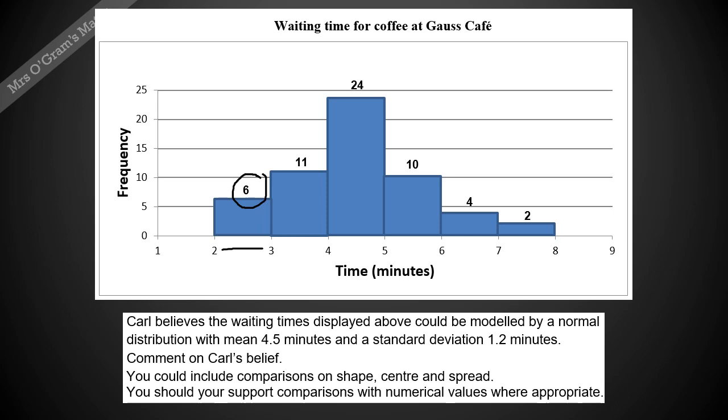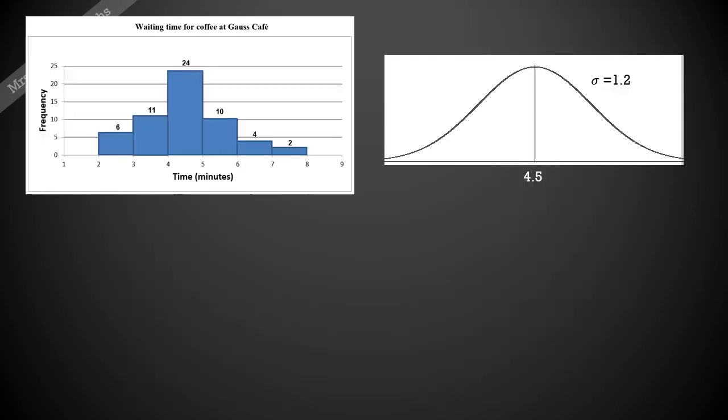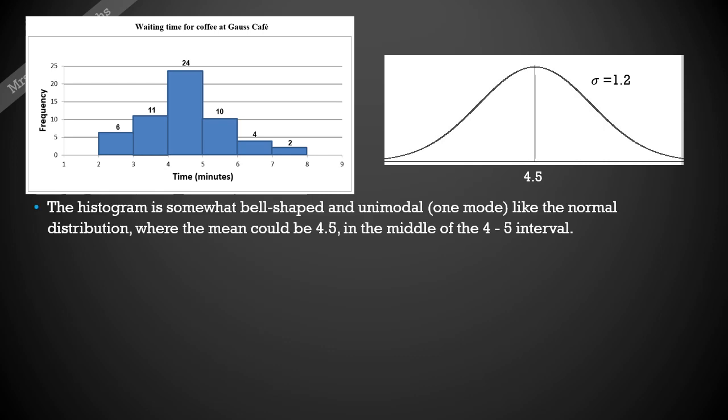We've got these two graphs. The first one here is the histogram of what he recorded in his cafe, and then this second one here is the normal distribution that he's suggesting it could be modeled with. It has a mean of 4.5 and a standard deviation of 1.2.